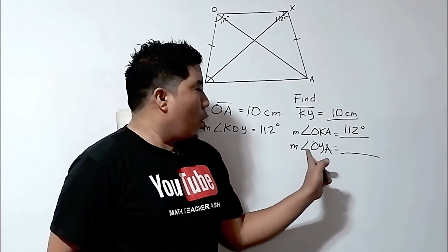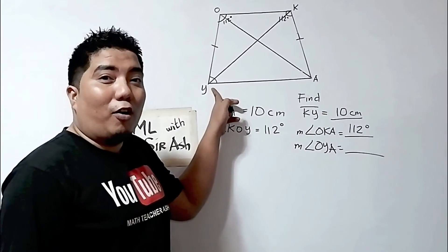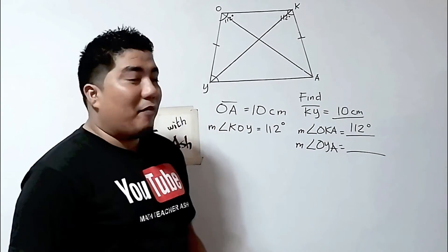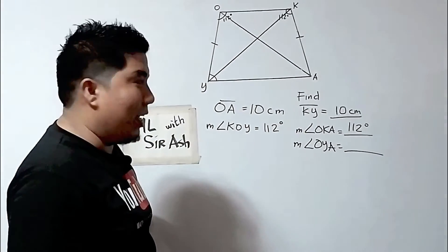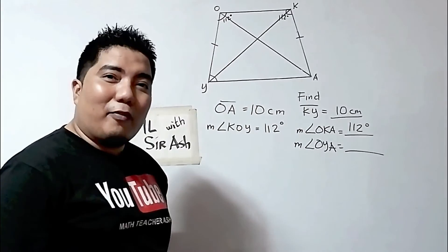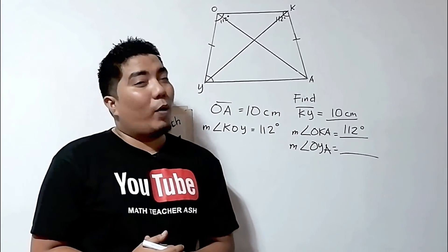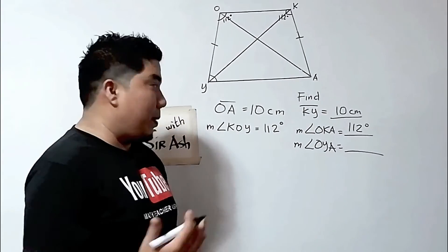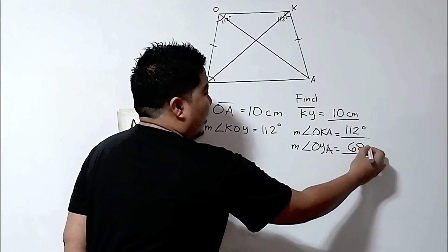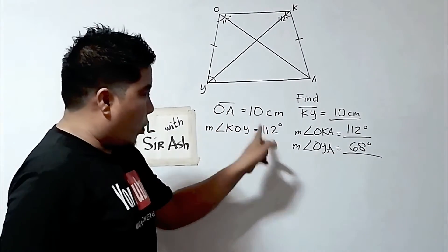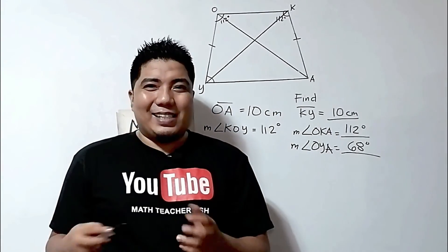And last but not least, we have the measurement of angle OYA. As I said earlier in my tip, if you have an isosceles trapezoid, this angle and this angle are supplementary. So what is needed by 112 degrees to become 180 degrees is 180 minus 112, and the answer for that is 68 degrees. Because 68 plus 112 is 180 degrees. So you have answered all the problems in this given figure.